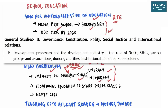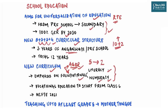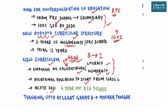The government will also do away with the rigid separation between academic, extracurricular, and vocational streams in schools, with vocational education starting from class 6 along with internships. Continuous evaluation and training of teachers is equally important — the National Curriculum Framework for Teacher Education (NCFTE) 2021 will be formulated by NCTE in consultation with NCERT. By 2030, the minimum degree qualification for teaching will be a four-year integrated B.Ed. degree.